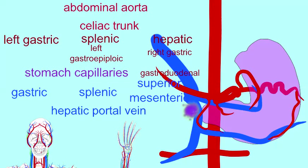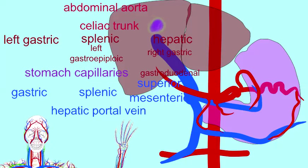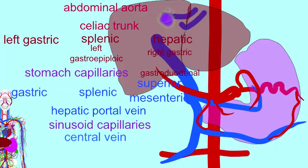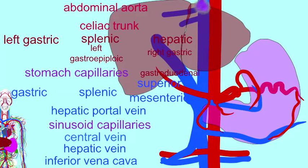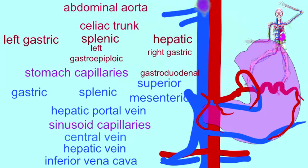This portal vein does not empty into the inferior vena cava. Instead, it proceeds to the liver and, along with branches of the hepatic artery, forms the sinusoid capillaries which proceed through the lobules of the liver. From the sinusoid capillaries, blood drains into a central vein into hepatic veins, which then drain into the inferior vena cava, and this blood is then returned to the right atrium of the heart.